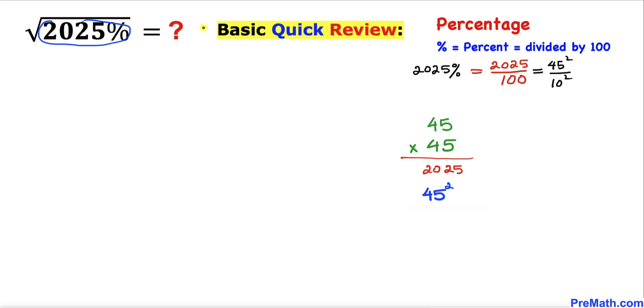Therefore I am going to replace this radicand, this part, by this one: 45 squared divided by 10 squared. In this next step, I just wrote down square root of 45 squared divided by 10 squared. And now this could be written in this form, the whole squared.